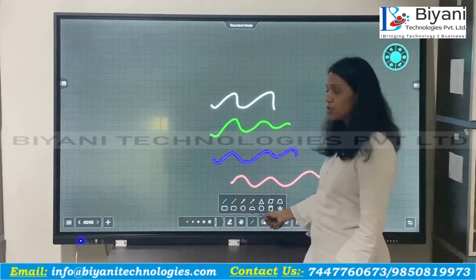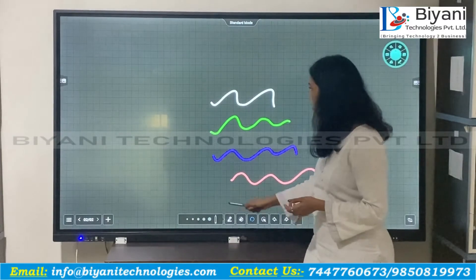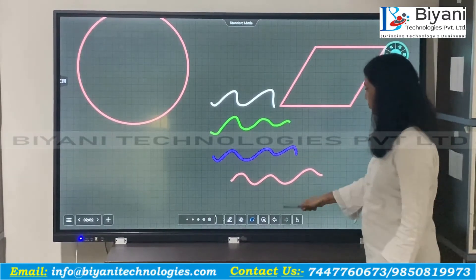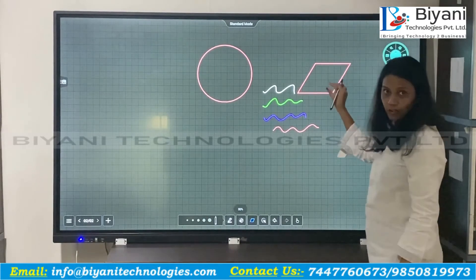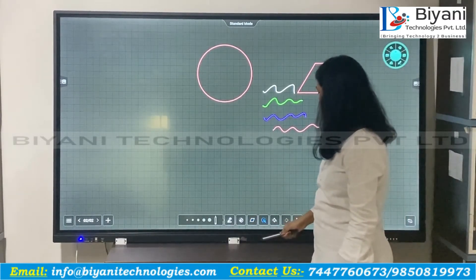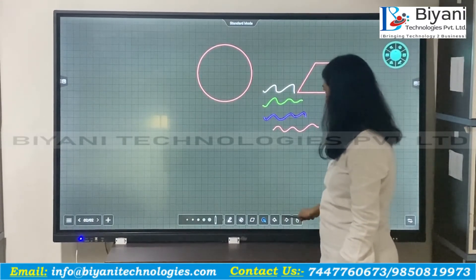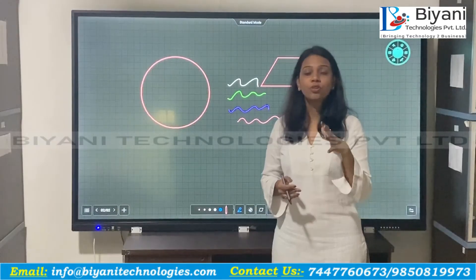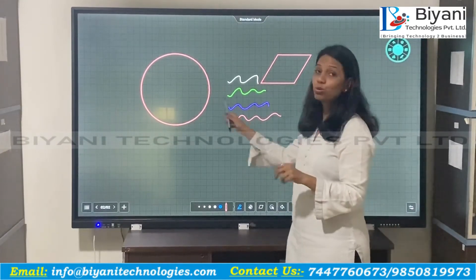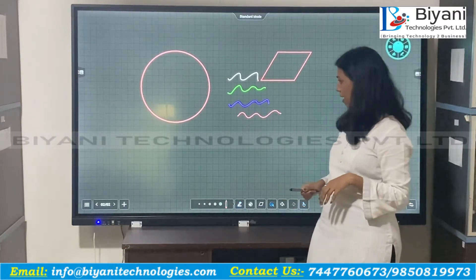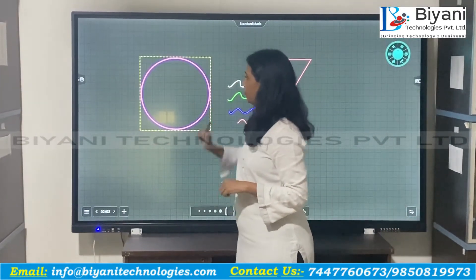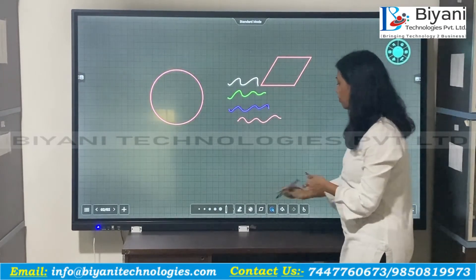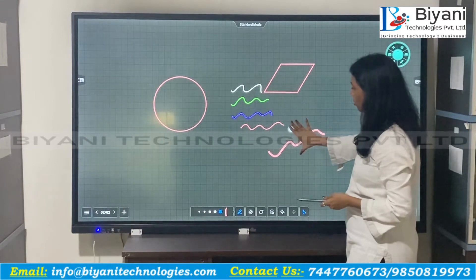Next is the shapes feature. If you are doing a maths class, you can insert any shapes you want — you just have to drag them onto the board. You can also zoom in or zoom out for your convenience. If you want to zoom a particular area, there is a zoom option — you just select that area and with two fingers you can zoom in or zoom out.